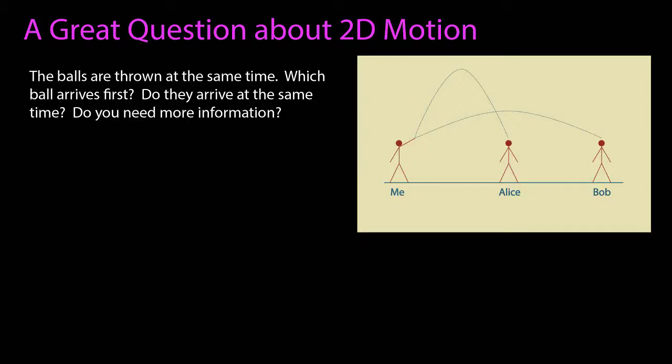This is one of my favorite questions about two-dimensional motion. I'm throwing two tennis balls at the same time, one to Alice, one to Bob, and the trajectories of the tennis balls are shown.